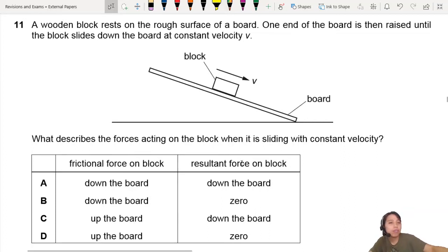A wooden block rests on the rough surface of a board. Rough surface should tell you there's some frictional force happening. One end of the board is then raised until the block slides down the board at a constant velocity V.